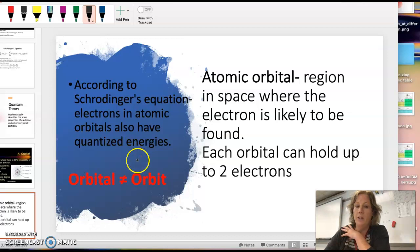According to Schrödinger's equation, electrons have atomic orbitals that also have those quantized energies, just like Bohr's model. We also have what we call an atomic orbital, which is that space where the electron is likely to be found. And the orbital can hold up to two electrons.